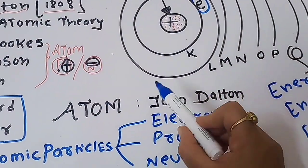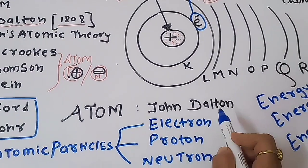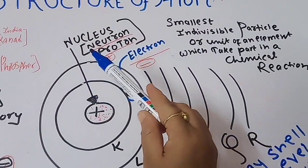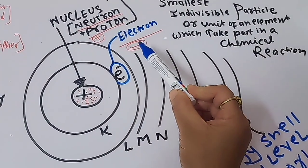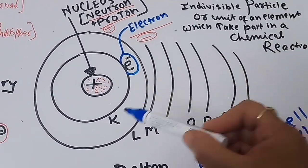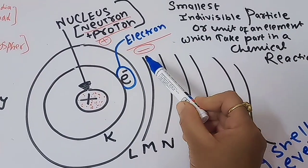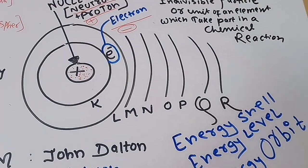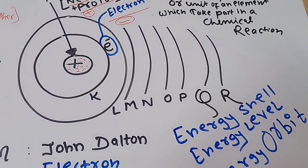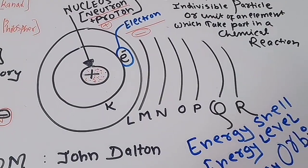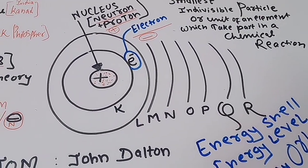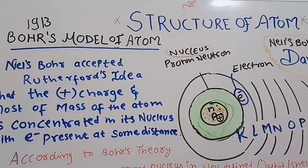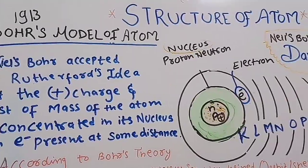The word 'atom' was used by John Dalton. We can say the atom is made up of tiny particles: electrons, protons, and neutrons. The electron is a negatively charged particle, the proton carries a positive charge, and as a whole the atom is electrically neutral. We will study the discovery of electrons, protons, and neutrons, but today I am going to explain the atomic structure — the structure of the atom.